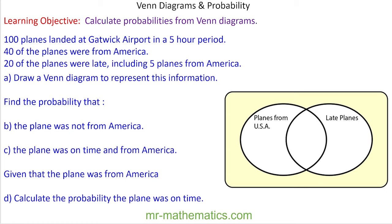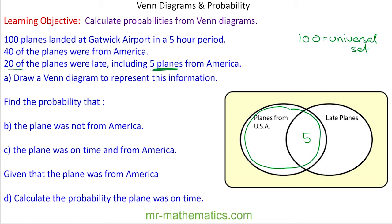We know there are 100 planes in total — that is our universal set. 40 planes were from America, so this oval must contain 40 planes. 20 planes were late, including 5 from America — those 5 would fall in the intersection of both ovals. So the late oval has 5 in the intersection and 15 in the remaining part. The America oval has 5 in the intersection and 35 remaining. In our union we have 55 planes, which means 45 planes were not from America and not late.